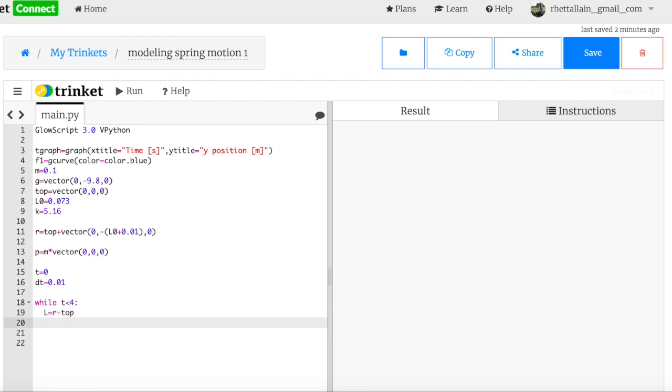Now, I can calculate the net force. I'm going to do this in one line because I think we're all grownups here. F net equals M times G plus, and remember, that's a vector. G is a vector. Plus, actually, minus K times L, the magnitude of L, which would be mag L, minus L0. And then I need to multiply that by L hat. So it's going to be times norm L. The norm is the unit vector of L built in. So that's it. That's F net.